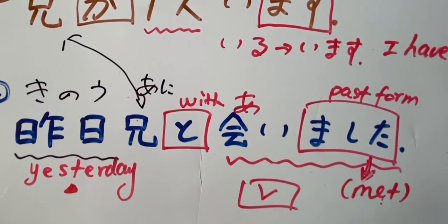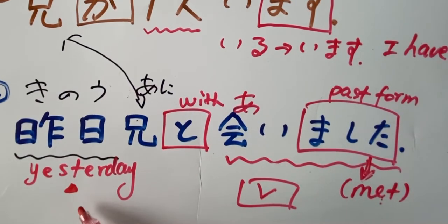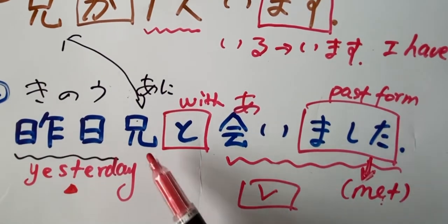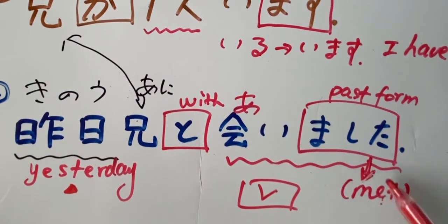Or if it's something happening in the morning, asa. Ne. Early in the morning, asa. Asa. Okay. Ani to. Ne. To. Aimashita. With. Ne. I met with my brother.